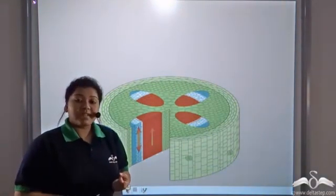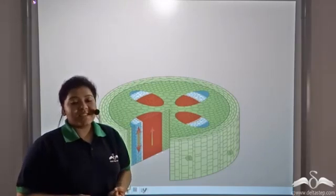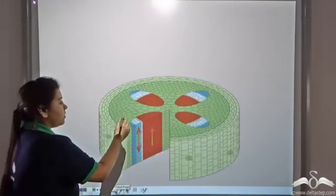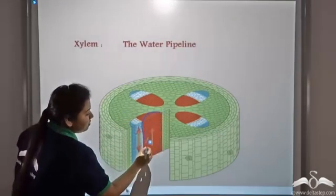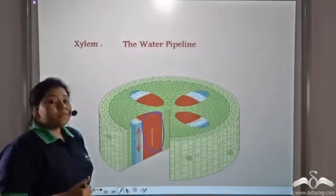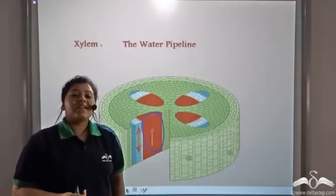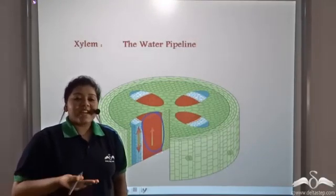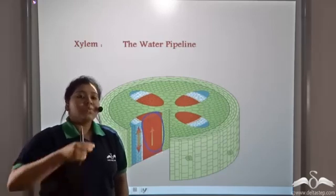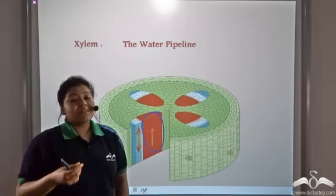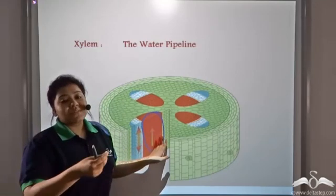The first pipeline is the water pipeline and is known as the xylem. This is the xylem, which is the water pipeline of the plant. It conducts unidirectionally — in one direction — from the root to the leaves.